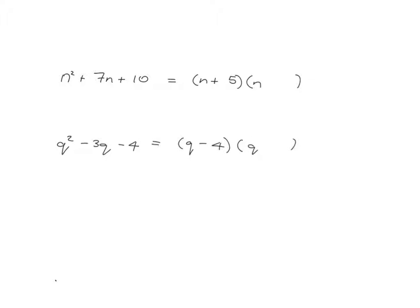Today we're going to reverse the process of multiplying out. In other words, we've been used to having two brackets and using FOIL to multiply them together and getting to an answer like this. The question we're going to ask ourselves today is if we're actually given the sort of answer, can we break it down into the two brackets that will multiply together to give you that? So let's start with one where we've been given some clues already. Can you try and figure out what needs to go into each of these brackets in order that when you multiply out you get back to this?